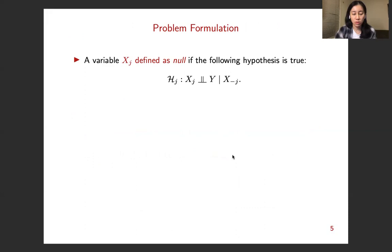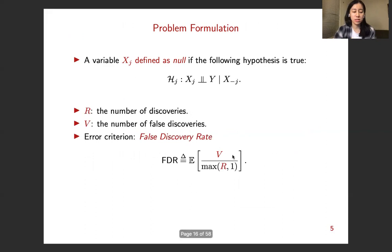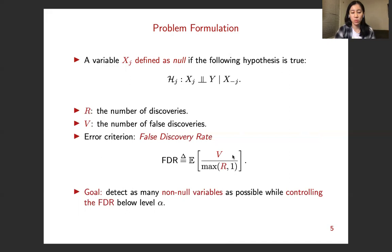Formally, we define a variable xj to be null if it is independent of the response conditional on all the other covariates. Let R be the number of discoveries, V the number of false discoveries. We consider the error criterion, the false discovery rate, defined to be the expectation of the ratio of the number of false discoveries to the number of discoveries. So our goal would be to detect as many non-null variables as possible while controlling the FDR below desired level alpha. For example, alpha can be 0.1.